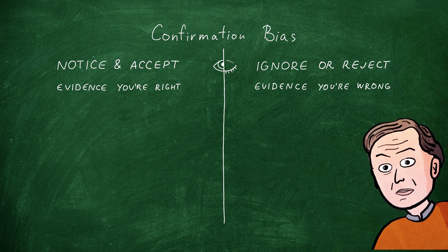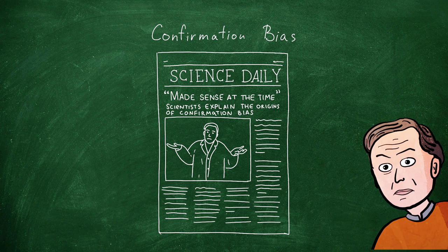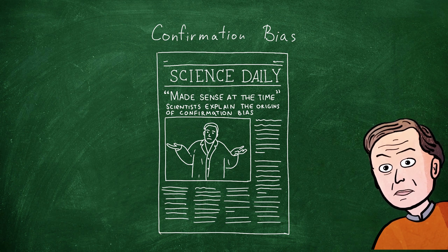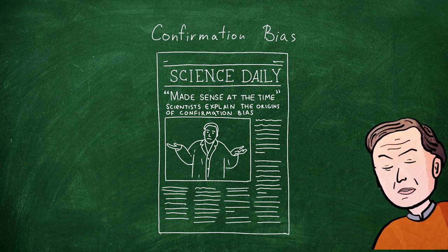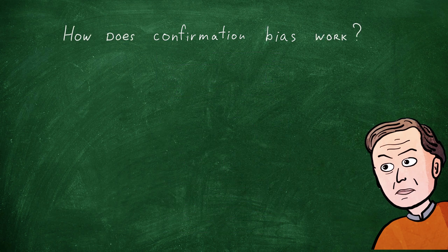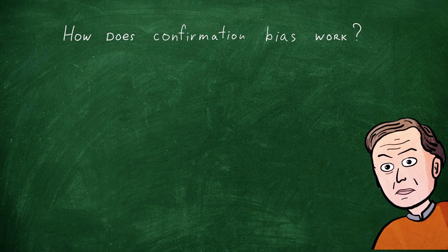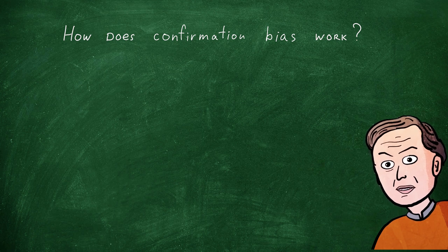Evolutionary psychologists have some good answers to the question of why natural selection built this distortion into us. But for purposes of learning how to fight the distortion, that isn't the key question. The key question is, what mechanism did natural selection use to implement the distortion? How does confirmation bias work?